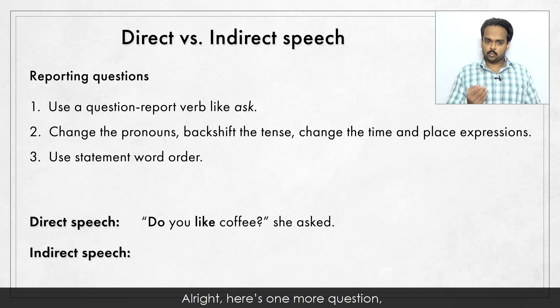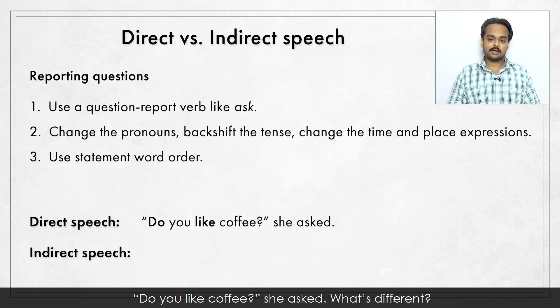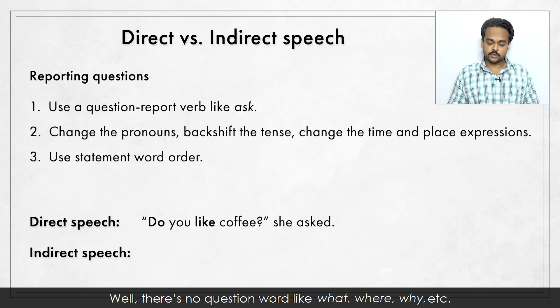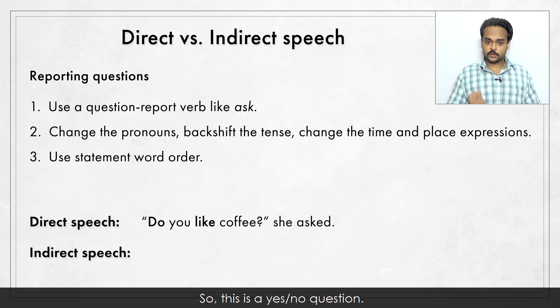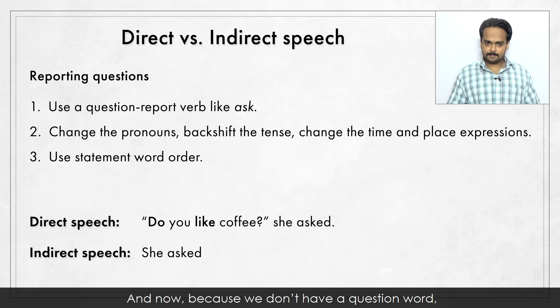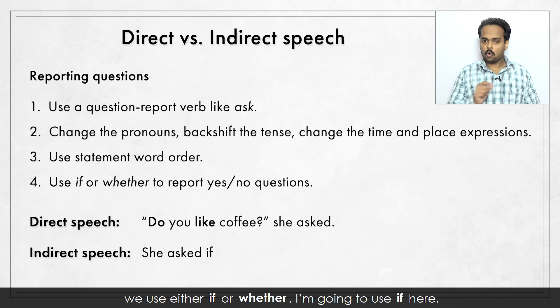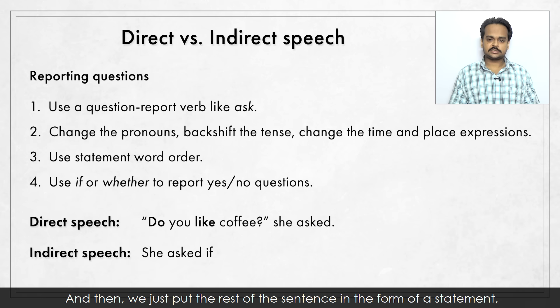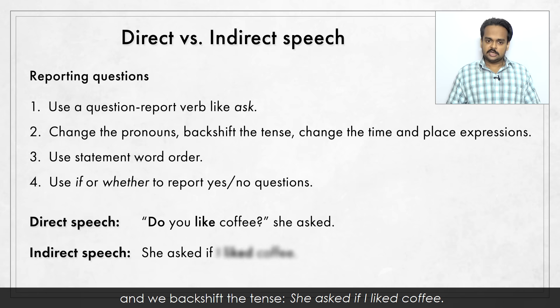Here's one more question, but there's something different about it. "Do you like coffee?" she asked. There's no question word like what, where, why, etc. So this is a yes or no question. The process is almost the same. We start with the reporting verb – "she asked". Because we don't have a question word, we use either "if" or "whether". Then we put the rest of the sentence in the form of a statement and backshift the tense: she asked if I liked coffee. Again, no question mark.